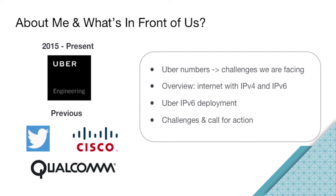First, a little bit about myself. My name is Jing He. I'm a network engineer working at Uber. I joined Uber in 2015, and prior to working at Uber, I worked at Twitter, Cisco, and Qualcomm. All my career has been in the networking field, and I'm going to share my networking knowledge with everyone today and decode Uber's network.